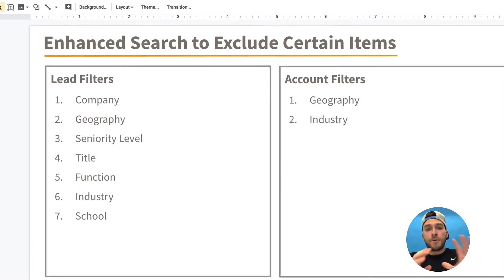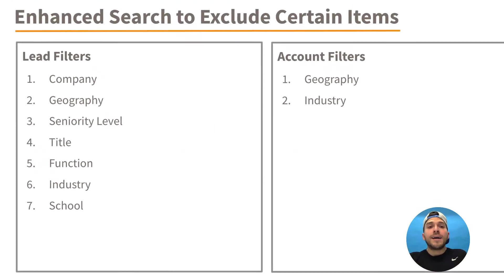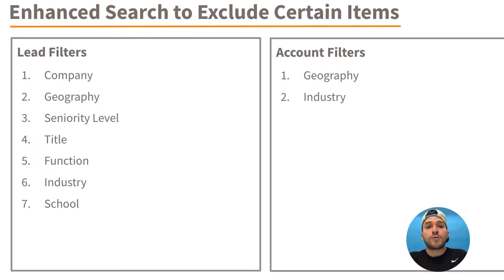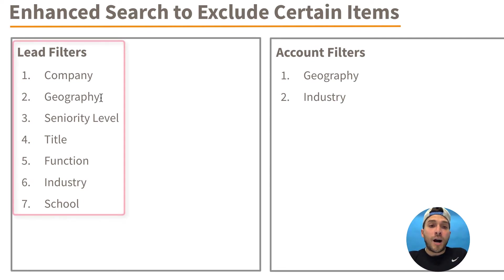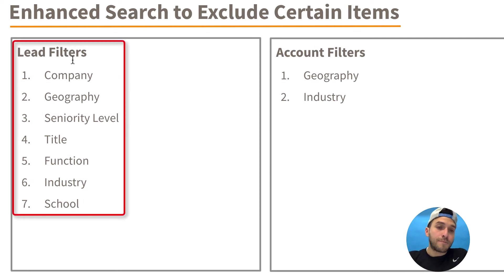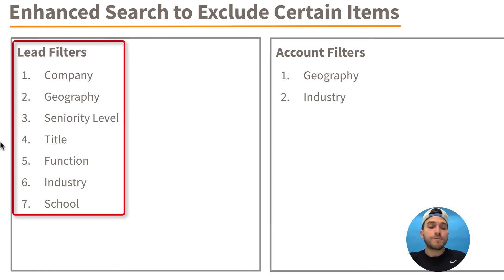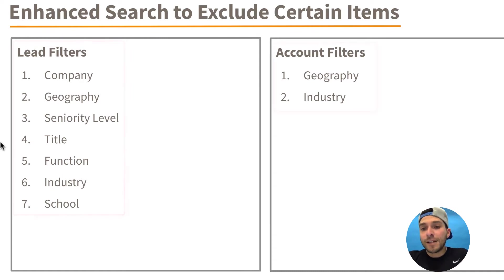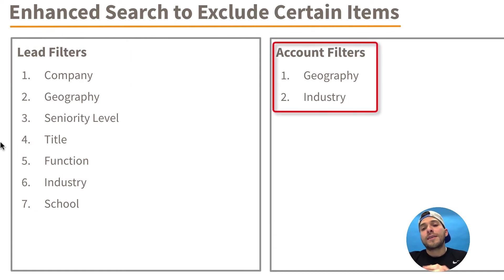Here are all the specific enhanced search fields you can exclude on lead filters: company, geographies, seniority level, title, function, industry, and school. On an account level, you can exclude geography and industry.